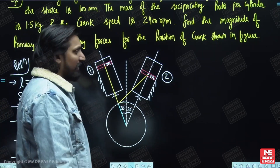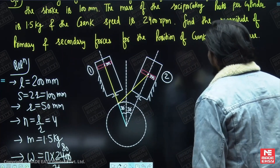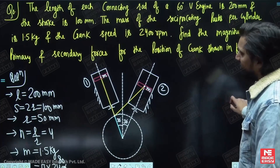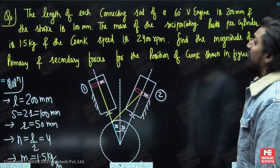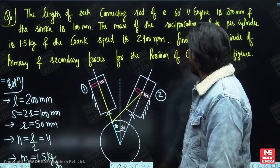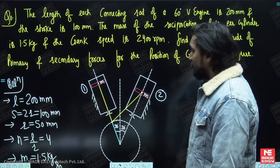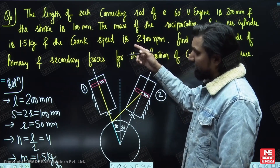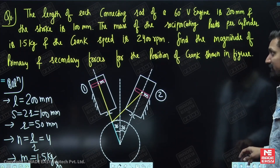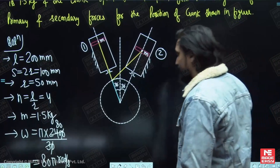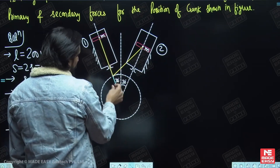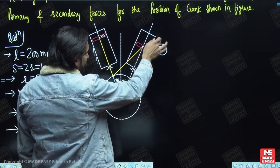At that position, the examiner has asked the magnitude of primary and secondary forces. Let us read the question once again: the length of each connecting rod of a 60 degree V engine is 200 millimetres and the stroke is given. You can calculate the crank radius, which is half the stroke length. Mass of reciprocating parts and crank speed are given. Find the magnitude of primary and secondary forces. The crank is common - connecting rod, piston, cylinder.